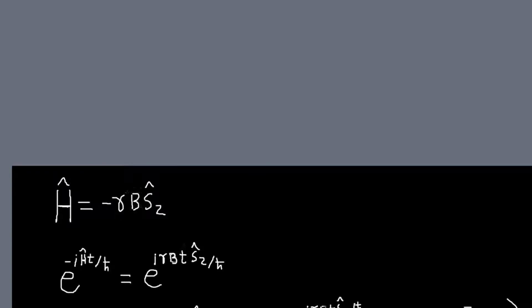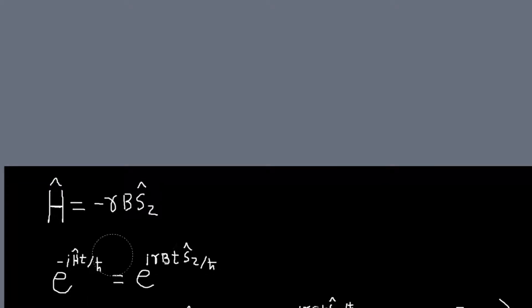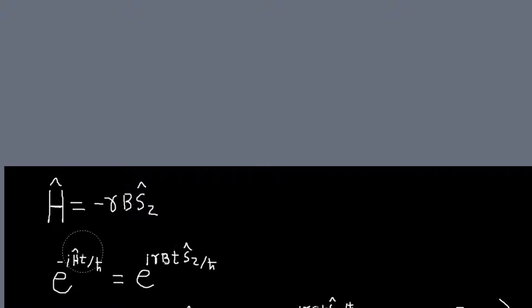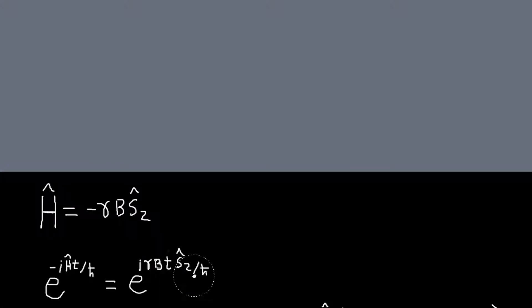Our Hamiltonian in that case didn't depend on time, so we can use the simpler expression for the time evolution operator. That's just e to the minus iHt over h-bar. If I plug in my expression for H here, it becomes this.